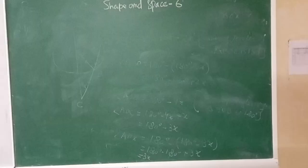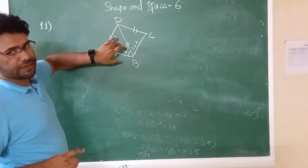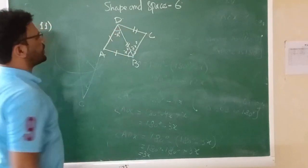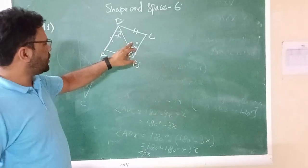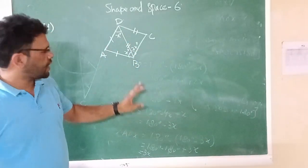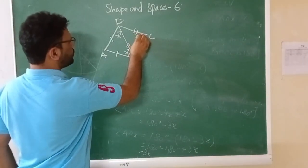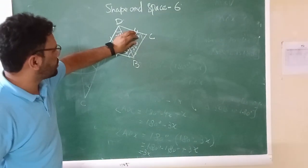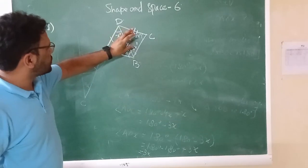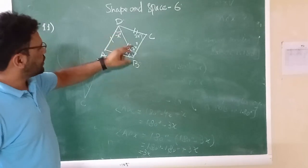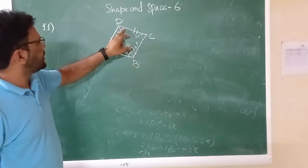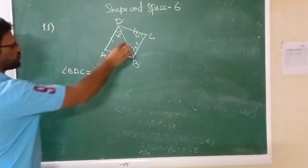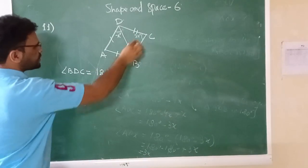Triangle ABD is an isosceles triangle, so the base angles are equal: angle ABD equals x degrees. Triangle BCD is also an isosceles triangle, and angle BDC is 2x degrees, so angle DBC is also 2x degrees. Now to find angle BDC from the triangle: 180 minus the sum of these two angles, which is 4x.